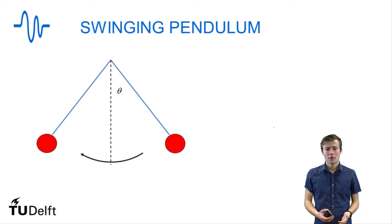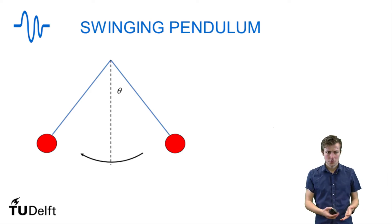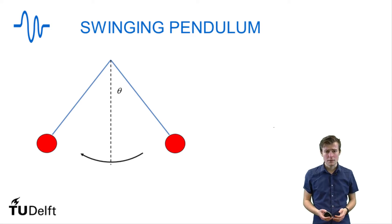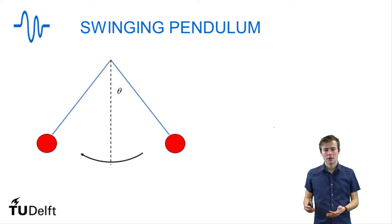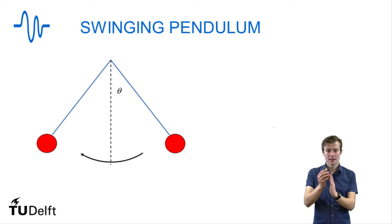Hello, today we will look into a swinging pendulum, and this pendulum can be considered to be a swing, like the spark in the beginning of this unit. In this motion we do not look at the horizontal position or the vertical position, but at the angle the mass makes between the equilibrium position.